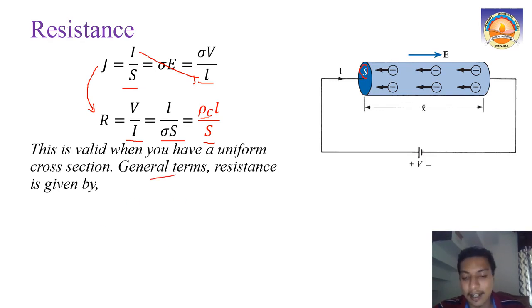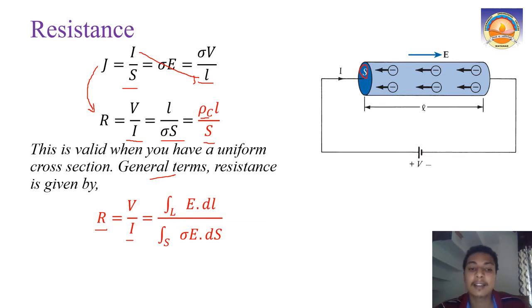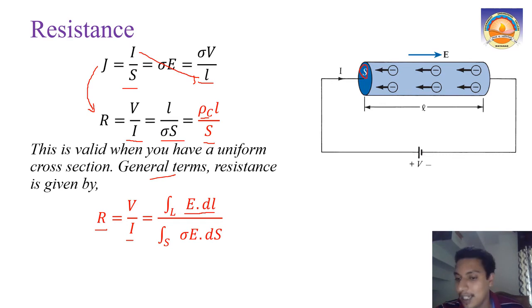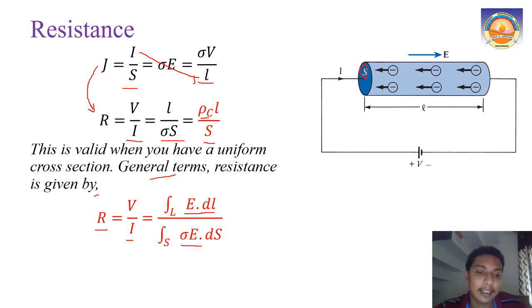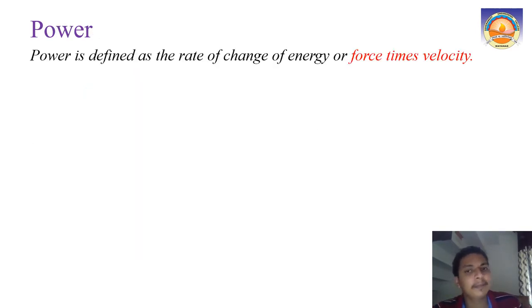In general terms, for any shape or circumstances, resistance is always given by R equals V/I from Ohm's law. Voltage is the line integral of E dot dl, and current is the surface integral of J dot dS, where J equals sigma E dot dS. This general expression for resistance we will cover further in the module.